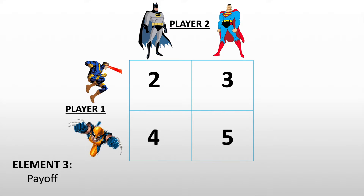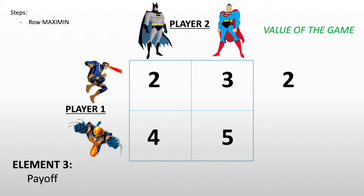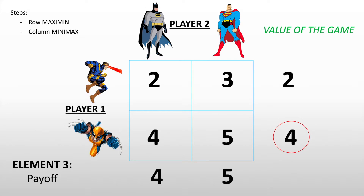So what we have to do here is to look for the value of the game. The first step is to do row maximin, meaning we have to look for the maximum of all the minimums for each row. The minimum of the first row is two, and the minimum of the second row is four, and the maximum of that is four. Then the next step would be to do column minimax — the minimum of all the maximums for each column. That's four and five for column one and column two, and the minimum between them is four. Four and four — that's equal, so that's what we call our saddle point.